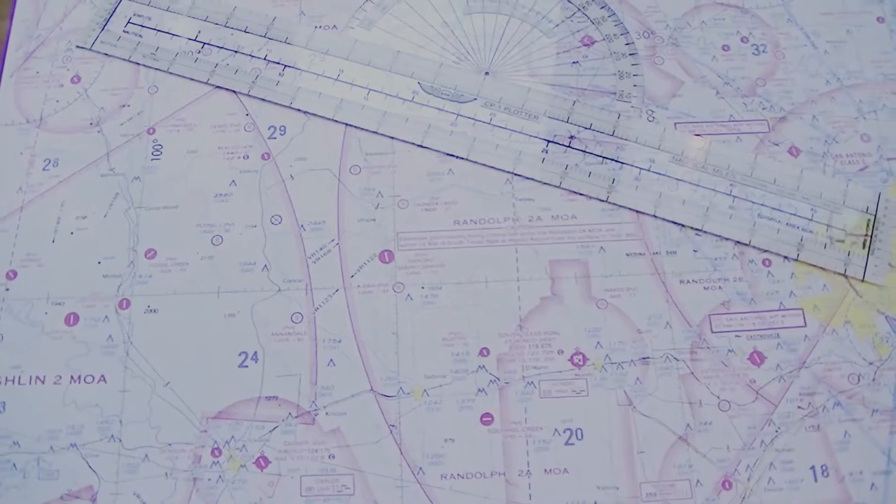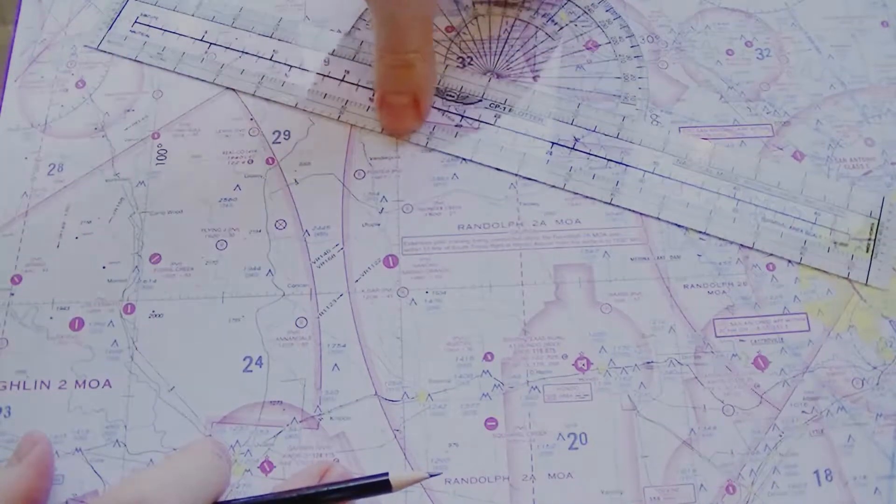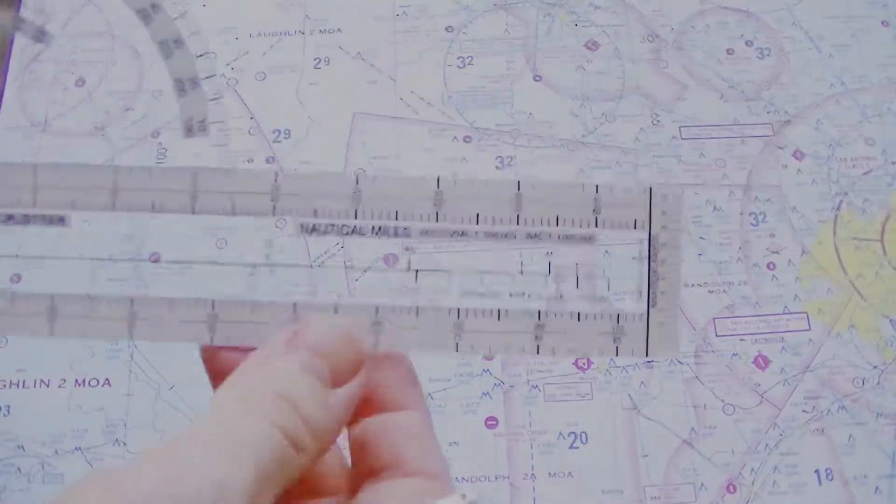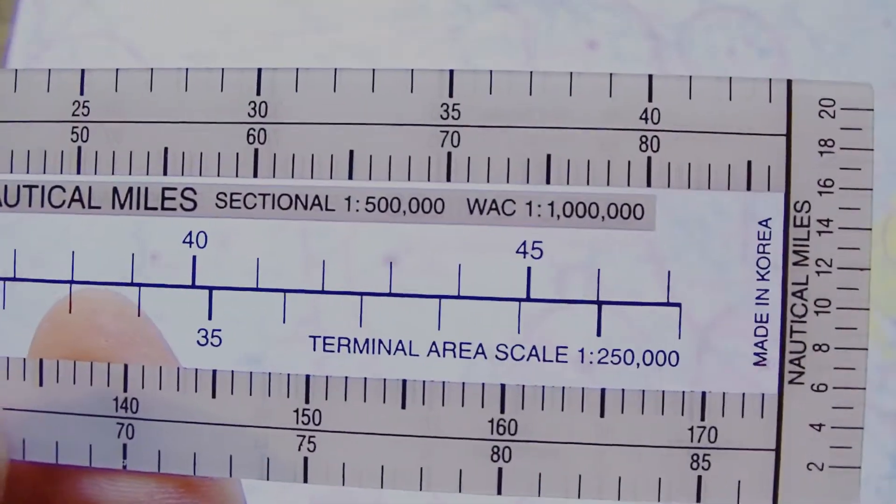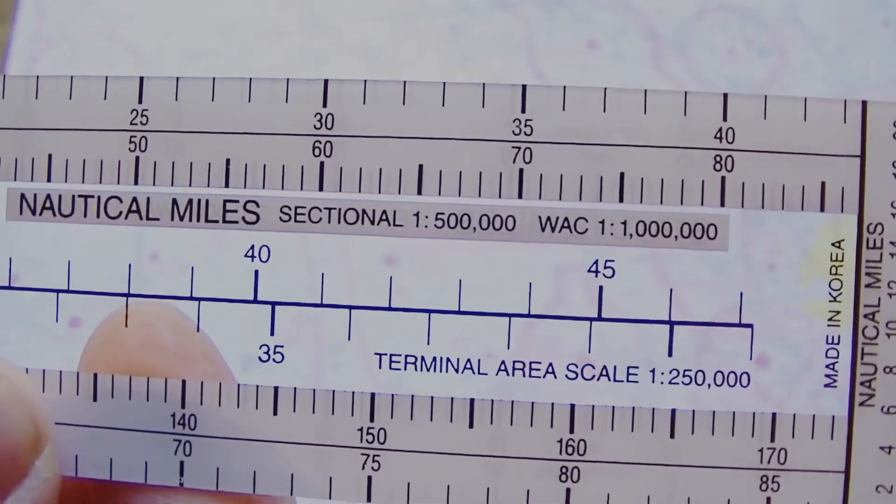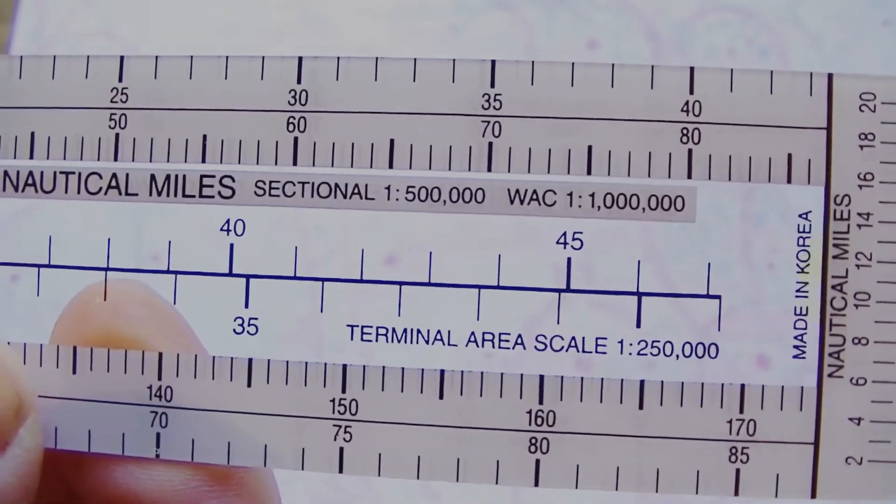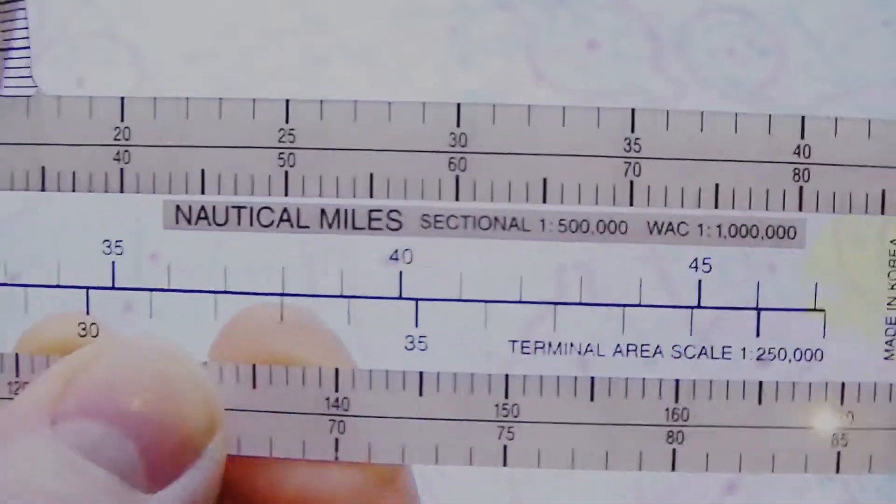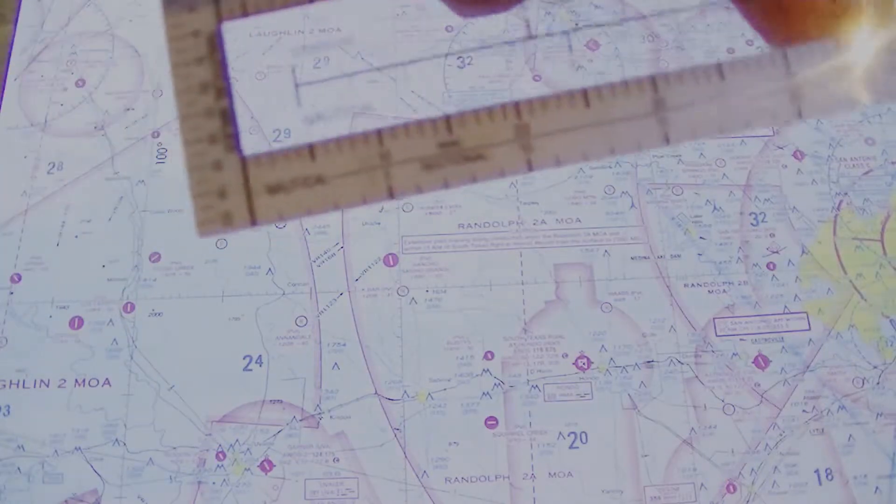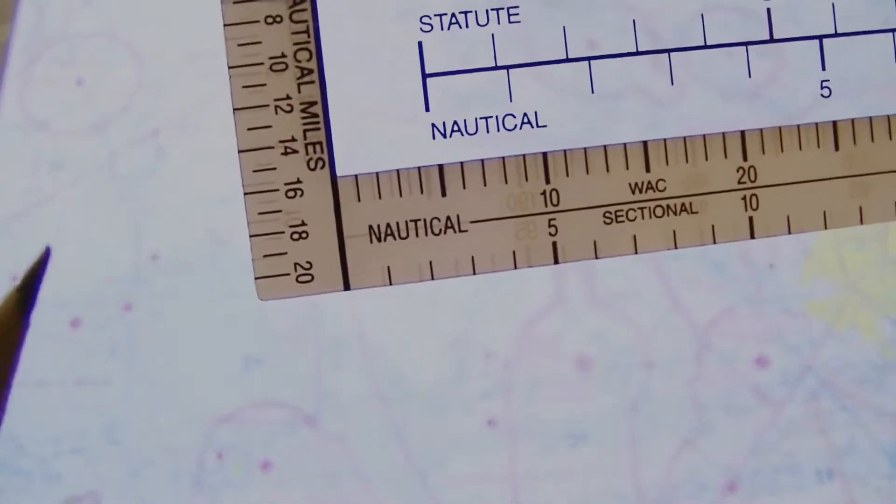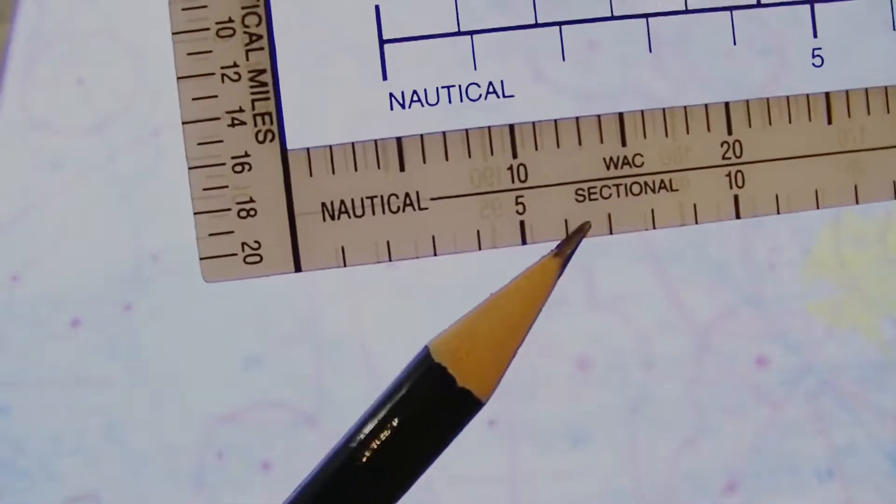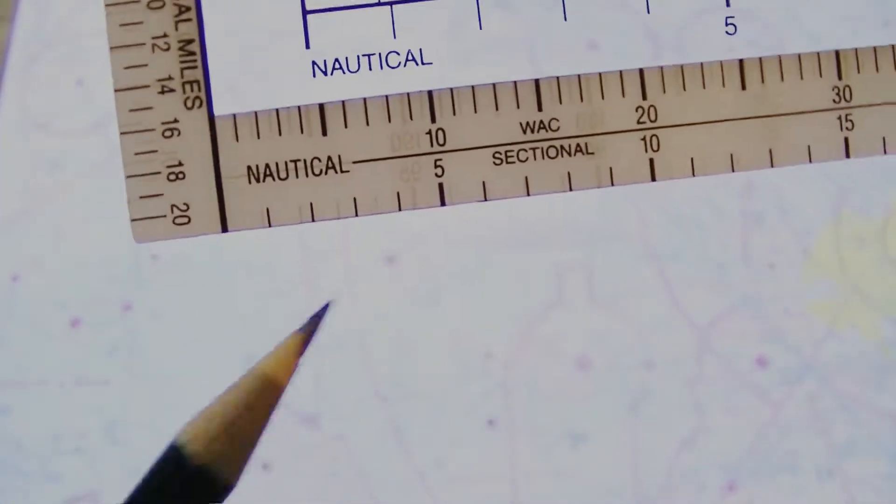Between these two airports, I'll line my plotter up, and we have to make sure on the plotter that we're using the nautical miles side. The sectional chart is 1 to 500,000. In this case, we're using a regular sectional chart, so we'll make sure that on our scale here at the bottom, we're using the sectional side.